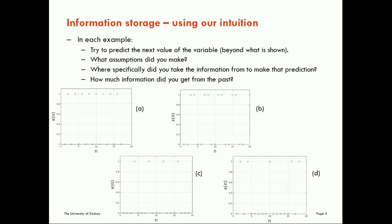And when you do, think very explicitly about what assumptions you made about the patterns that you were seeing, and where specifically you took the information from to understand those patterns and to make the prediction. How much information did you get from the past there, how certain might you be of what's coming next? Now, there's no single right answer to what the next values are going to be, but I want you to think about what you might predict it to be, and where you are taking that information from in that activity.